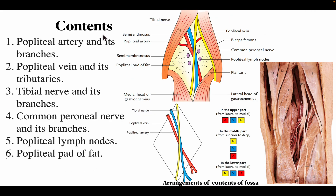The contents of the popliteal fossa are: the popliteal artery and its branches, popliteal vein and its tributaries, tibial nerve and its branches, common peroneal nerve and its branches, popliteal lymph nodes, and popliteal fat. In the diagram you can see the popliteal artery, popliteal vein, and tibial nerve.